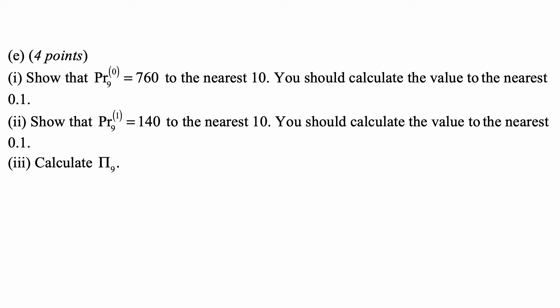Part E: Show that the profit at time 9, policy duration 9 in State 0 is 760 to the nearest 10. You should calculate the value to the nearest 0.1.